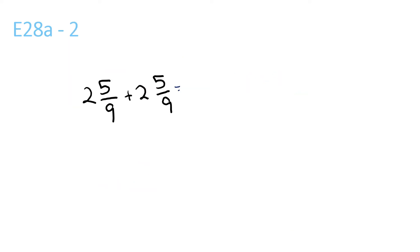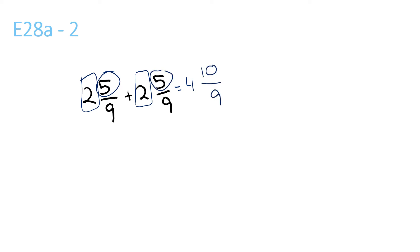For this question, first we do the 2 plus the 2, which is 4. Then we do the 5 plus 5, 10. Then we bring the 9 over. This is the same as 4 plus 1 and 1 over 9, which is 5 and 1 over 9.